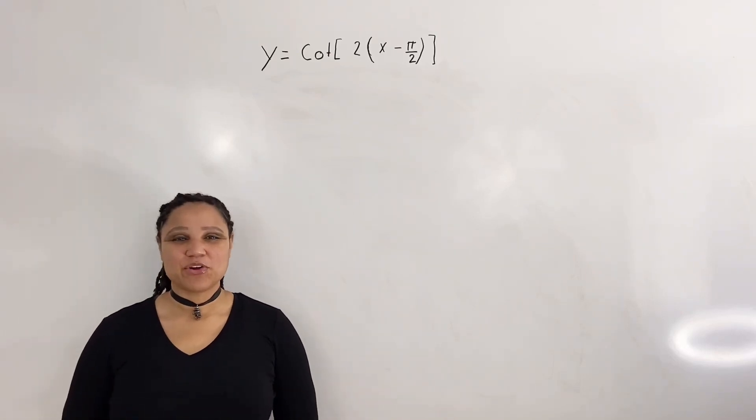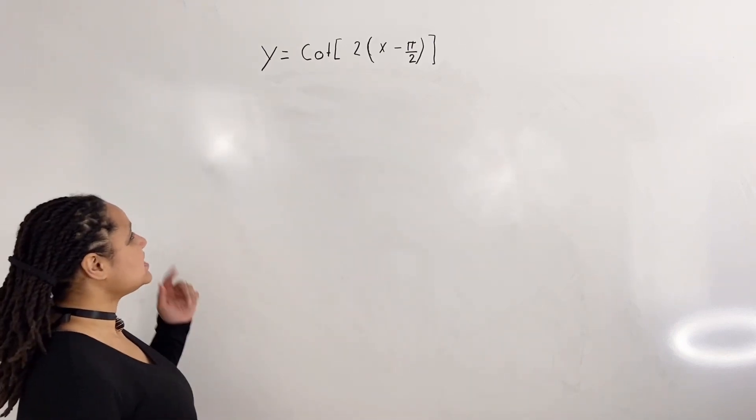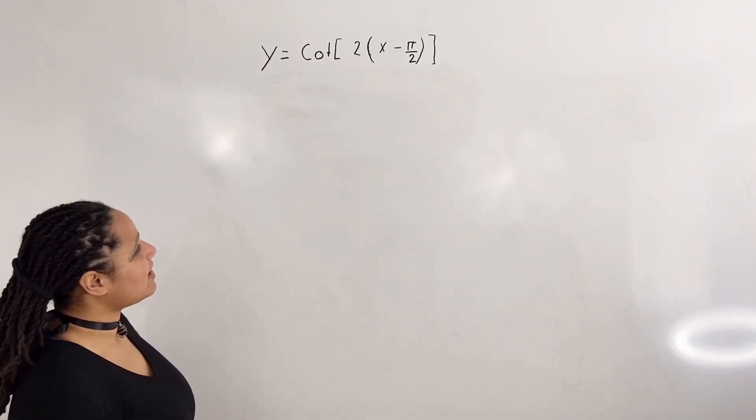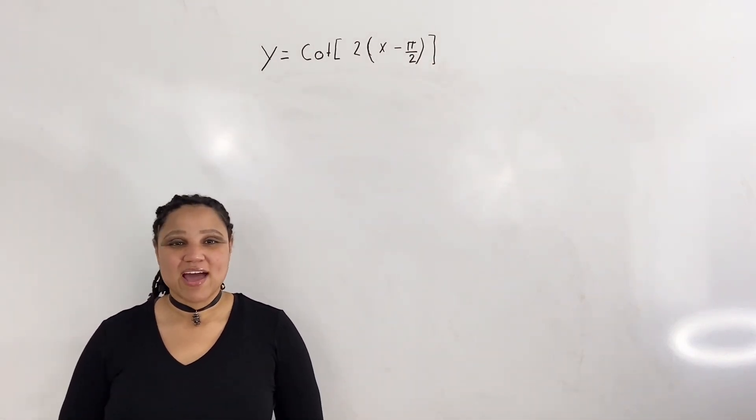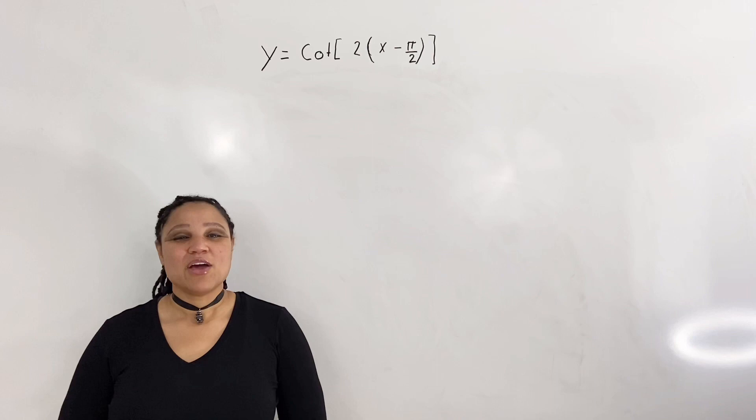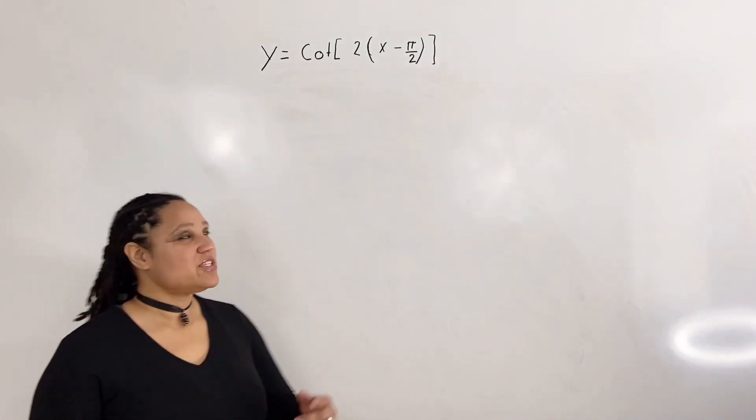In this video, we are going to graph the cotangent function with multiple transformations. Here we have y equals cotangent of 2 times x minus pi over 2, and we want to graph the cotangent function with multiple transformations.